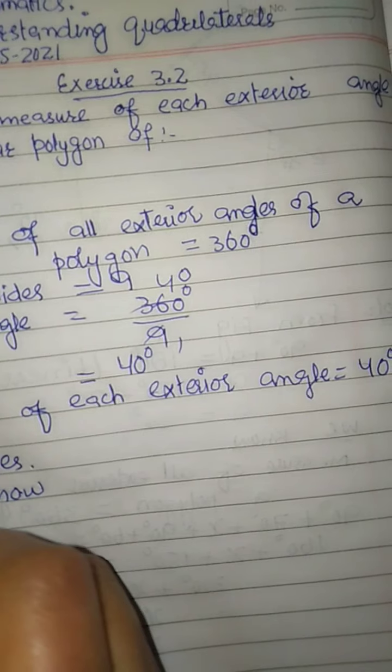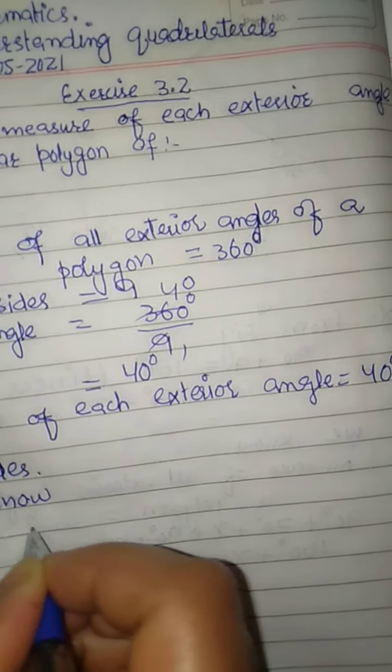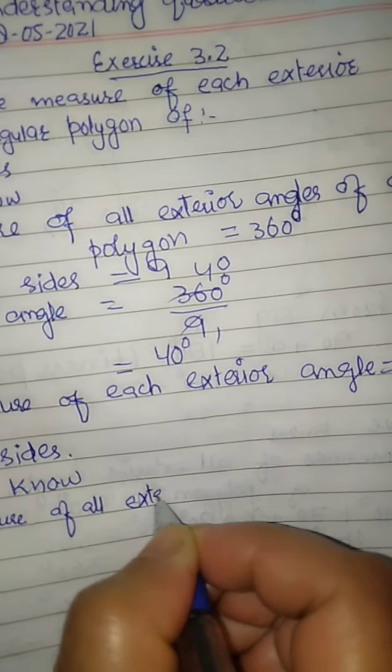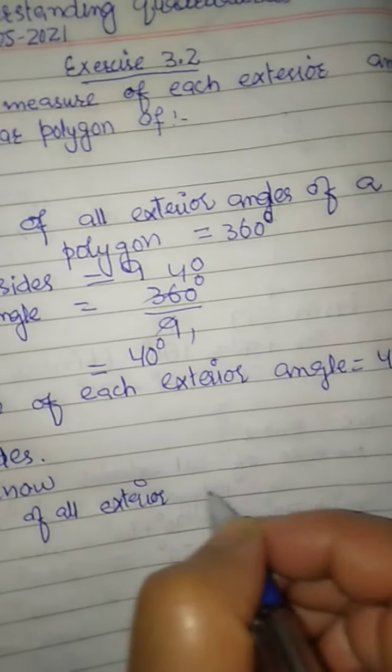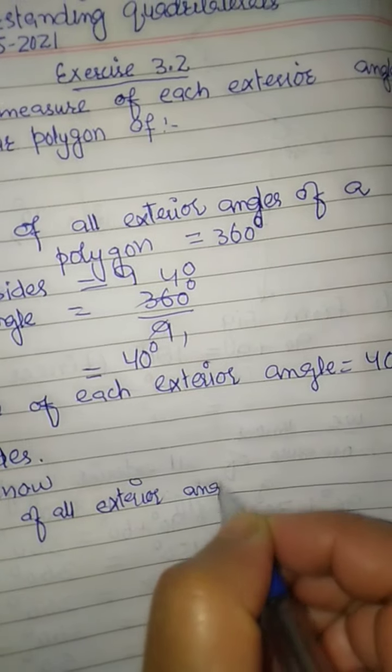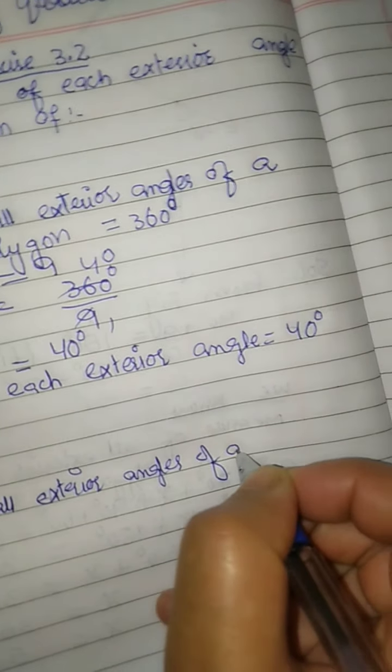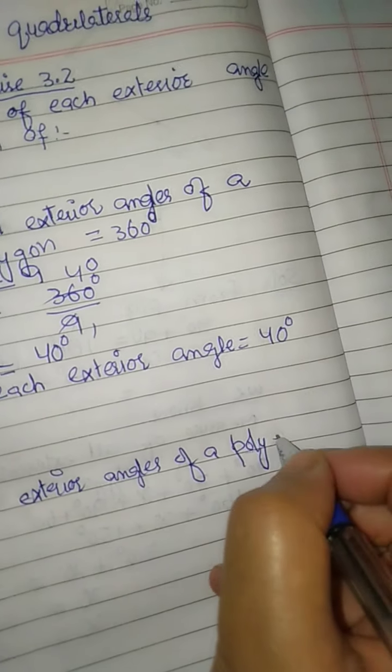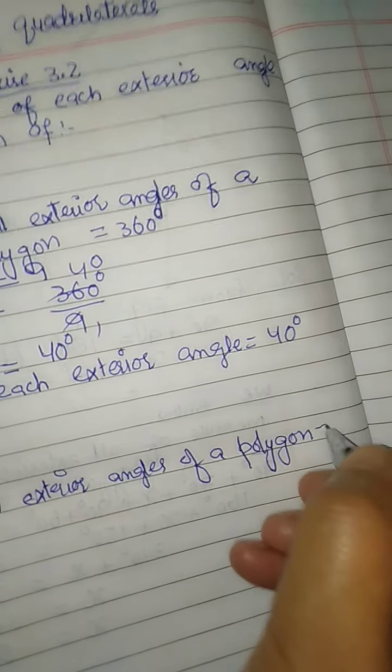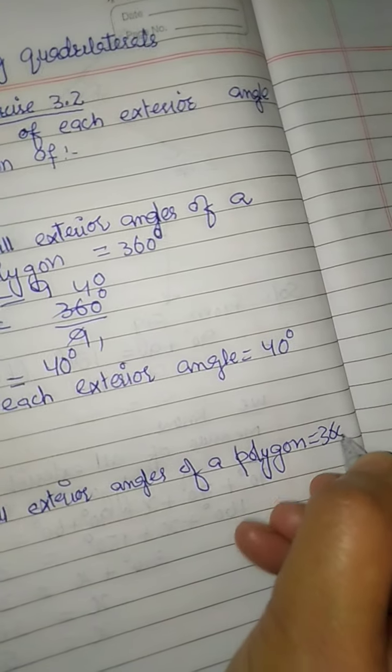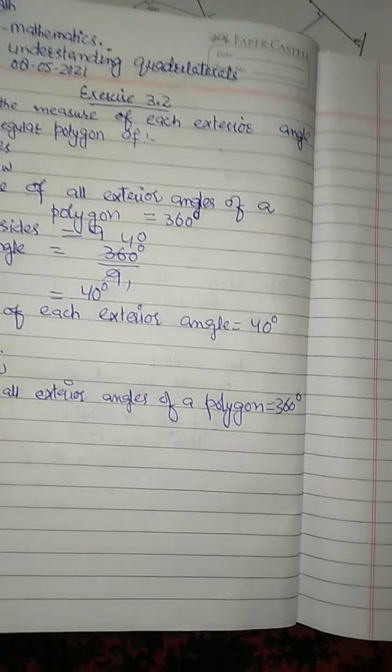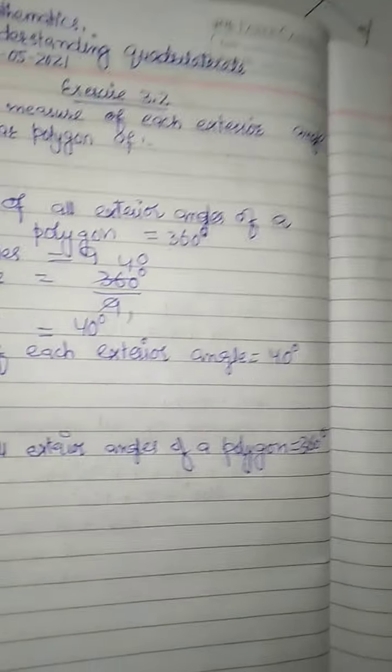We know the measure of all exterior angles of a polygon is equal to 360 degrees. For any polygon, the sum of all exterior angles is 360 degrees.